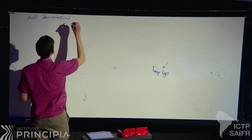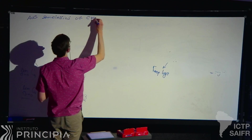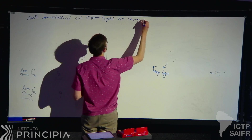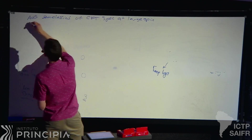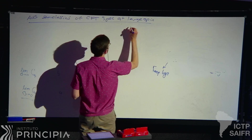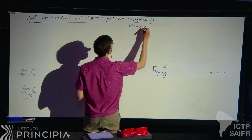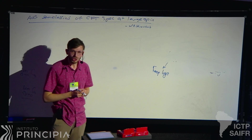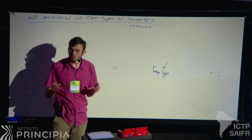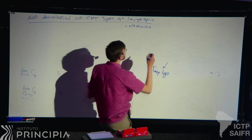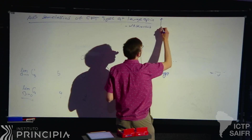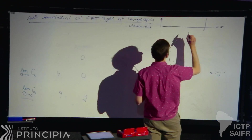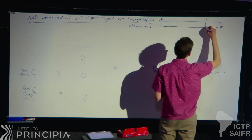I'm going to talk about the ADS semi-classics of the CFT spectrum at large spin. This is a fitting topic for the workshop because it's an example where explicit results from integrability point to more general properties in CFT that are amenable to bootstrap techniques. Just like Carlos's talk, I'll be looking at the large spin sector at fixed twist.